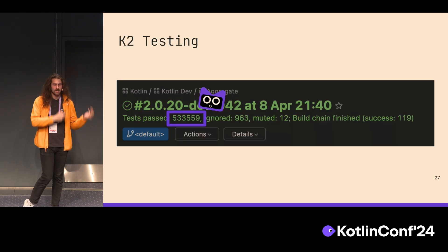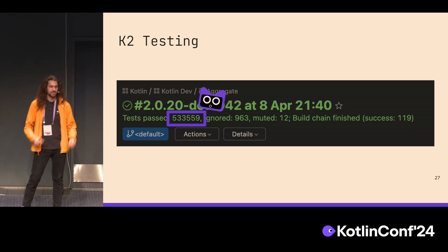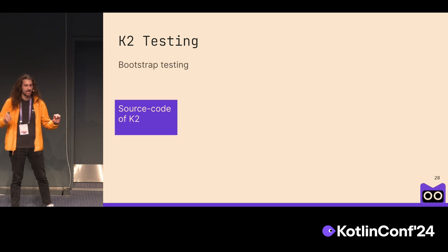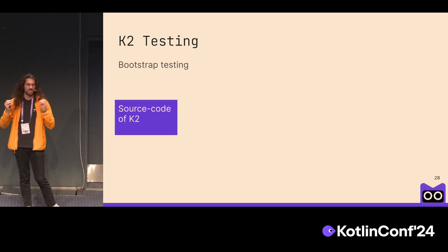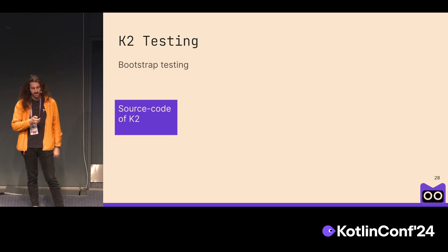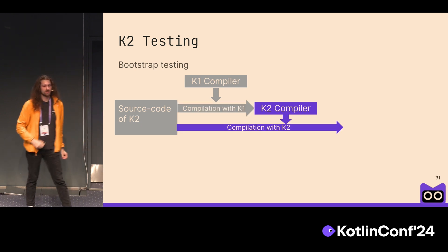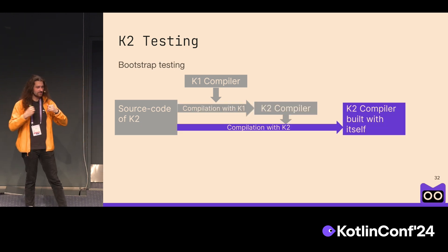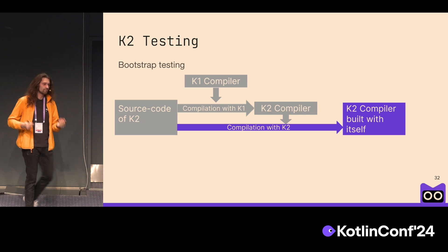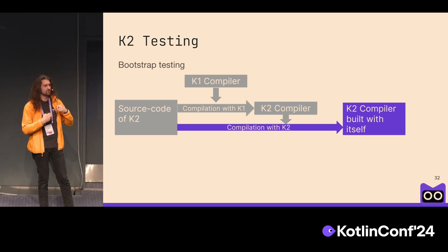And how did we test that? We can reuse most K1 tests — we intend to keep the language the same — yet that's only a small portion of test coverage. There are other techniques. The Kotlin compiler is written in Kotlin, so we can take the source code of K2, compile it with the K1 compiler, and now we have a functioning K2 compiler that we can use to compile the source code of K2 — building it with itself. We can then test that artifact, and the Kotlin compiler is a pretty big project, so it provides a nice way to extend test coverage and test the things you're actually working on right now.